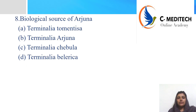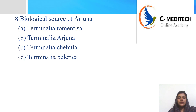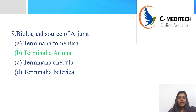Eighth question: what is the biological source of Arjuna? Options are: A) Terminalia tomentosa, B) Terminalia arjuna, C) Terminalia chebula, D) Terminalia bellerica. Arjuna possesses diuretic activity. The correct answer is option B, Terminalia arjuna.